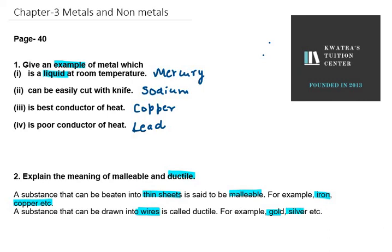Copper is one of the best examples of ductility. In general life, we have copper wires — these wires are drawn from copper itself. So this is one of the examples under ductile. That's all for question number one and question number two. Thank you for watching.